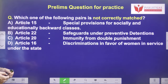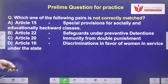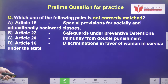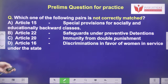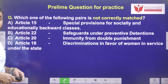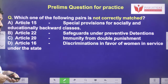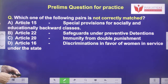Now let's see a previous video question: Which one of the following pairs is not correctly matched? Article 15 — social and educational backward class; Article 22 — preventive detention; Article 20 — immunity from double punishment; Article 16 — discrimination in favor of women in service under the state. Article 16 is wrongly matched, because in Article 16, nowhere is it mentioned about positive discrimination towards women.